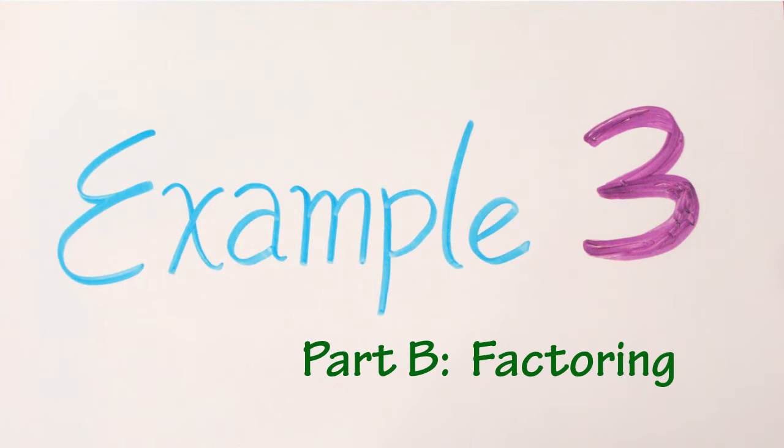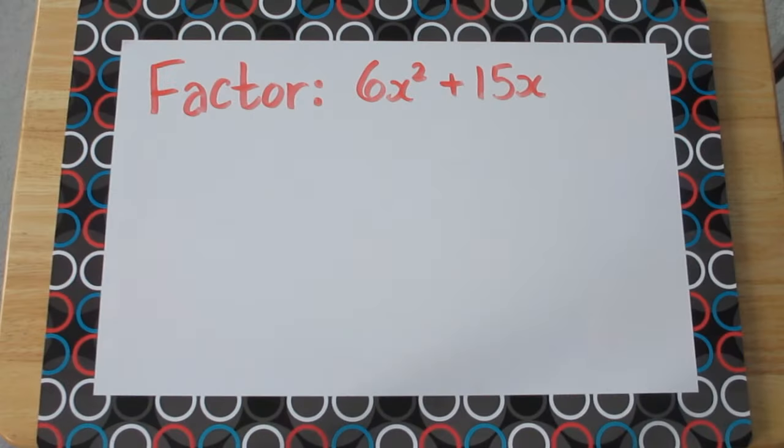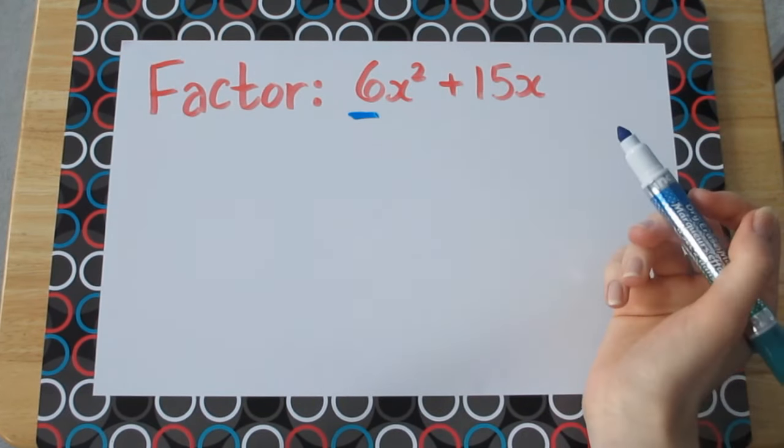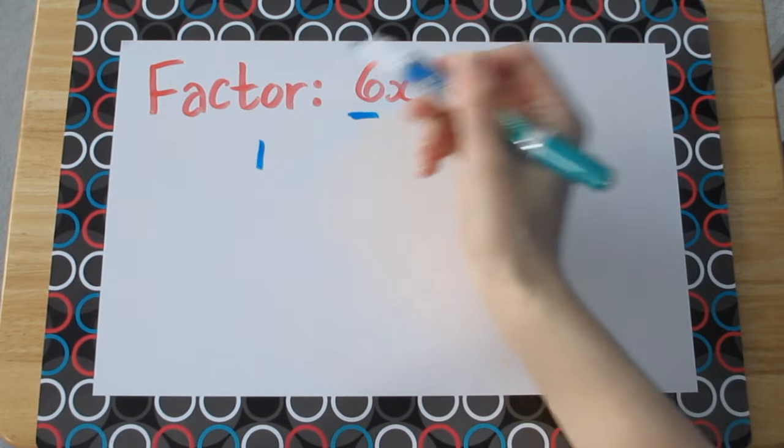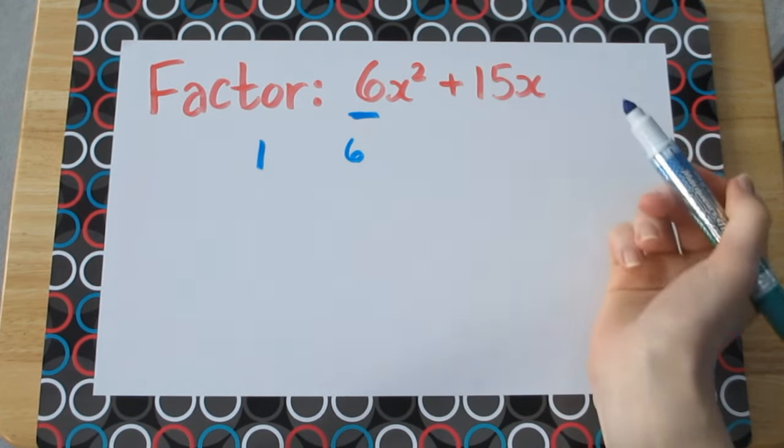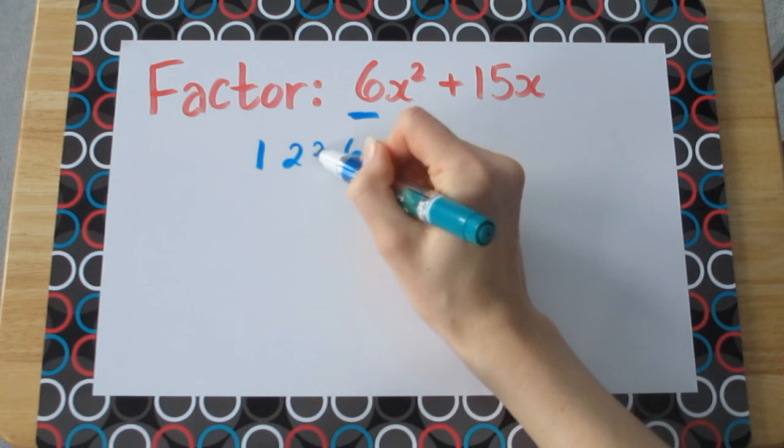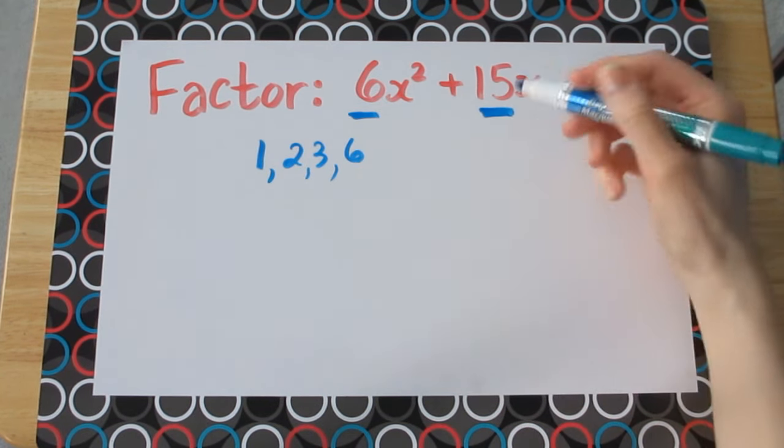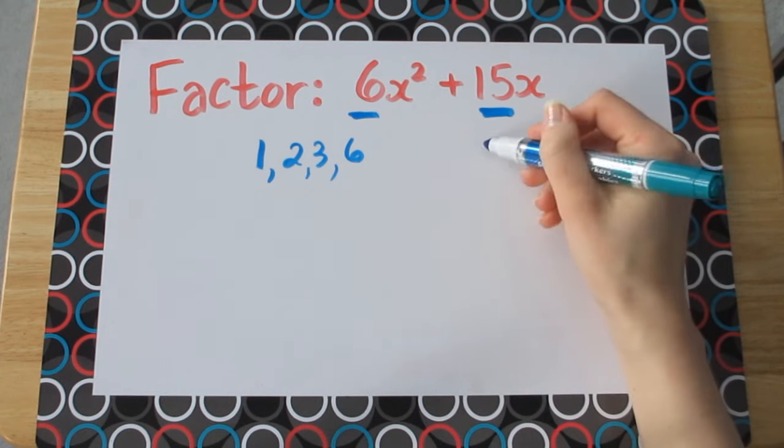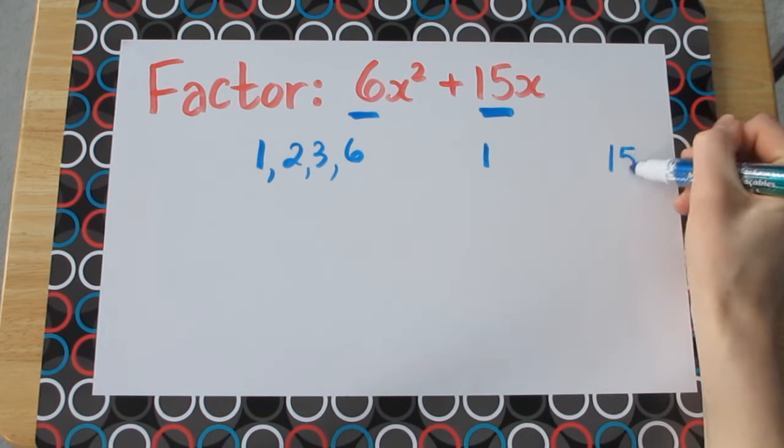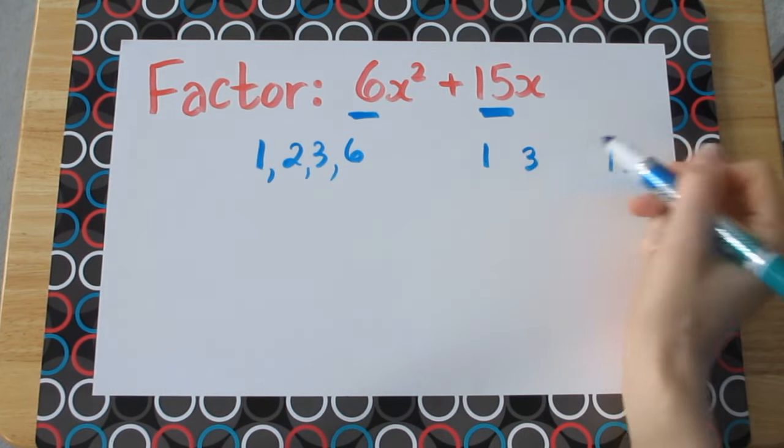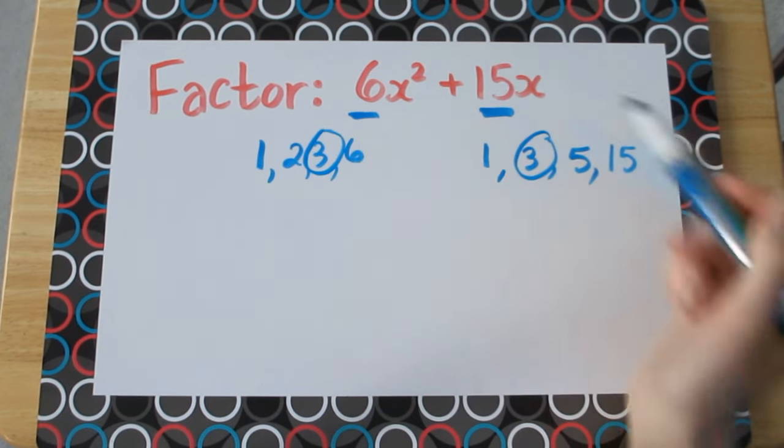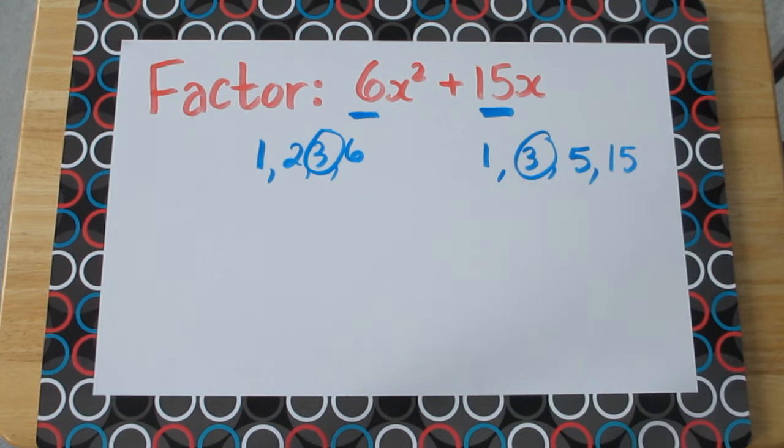Here's a factoring question involving exponents of x. So first let's just look at the numbers. Let's find factors of 6. So we know that we can multiply 1 and 6 as well as 2 and 3. How about 15? To get 15 we can multiply 1 and 15 as well as 3 and 5. We can see that 3 is the greatest common factor among these numbers.